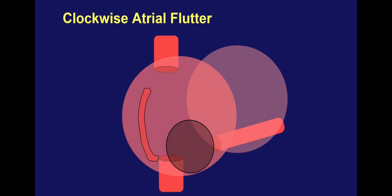If we look at the reverse circuit — the same route but the opposite direction — this is clockwise right atrial flutter, where the wavefront travels down the interatrial septum, across the cavotricuspid isthmus in the opposite direction, up the lateral wall of the right atrium again in front of the crista terminalis, and then back over the roof toward the top of the interatrial septum. This also travels through the cavotricuspid isthmus, so it is also referred to as isthmus-dependent flutter.